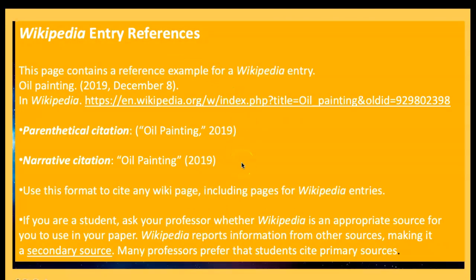Wikipedia entries are a tricky reference — they are prohibited by most professors. However, if using a wiki for a course, this is how you would format the entry. Note: if you are a student, ask your professor whether Wikipedia is an appropriate source. Wikipedia reports information from other sources, making it a secondary source, and your professor may prefer primary sources. Always ask your professor and read the assignment guidelines before using it.